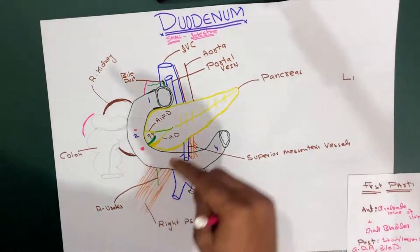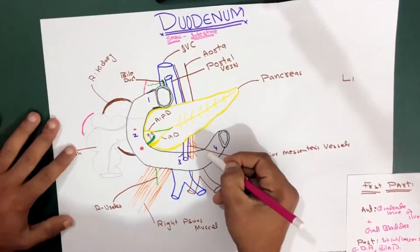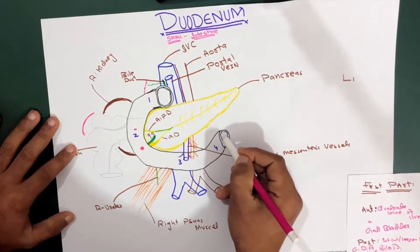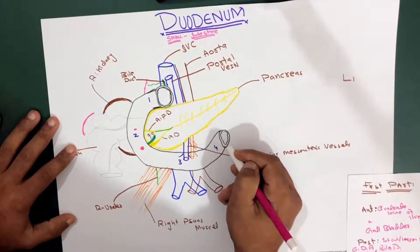It's going upward and to the left of the duodenal flexure. So we have got here the duodenal flexure.